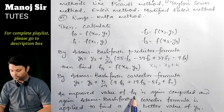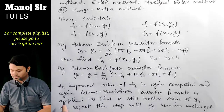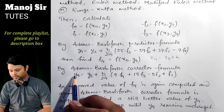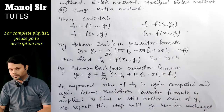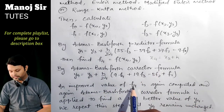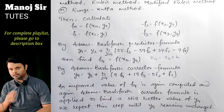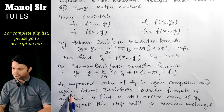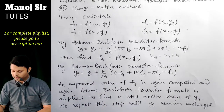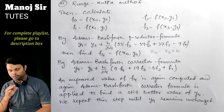To get an improved value of y₄, the Adams-Bashforth corrector formula is applied again. After finding y₄ from the corrector, recalculate f₄ using this new y₄, then substitute back into the corrector formula to get a new y₄. Check whether values agree to the required decimal places. Repeat until y₄ remains unchanged.